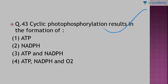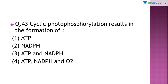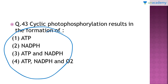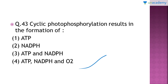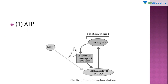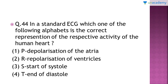Question number 43: cyclic photophosphorylation results in the formation of which of the following? The right answer is option number one — cyclic photophosphorylation results in the formation of ATP only, whereas in non-cyclic photophosphorylation both ATP and NADPH are formed.